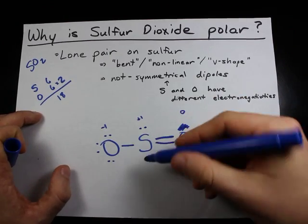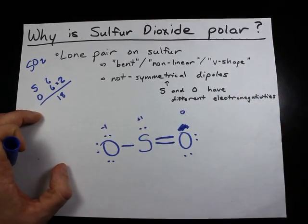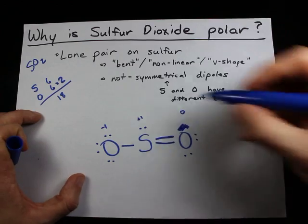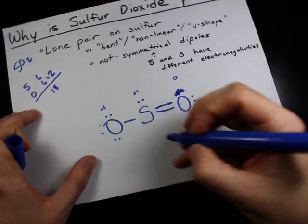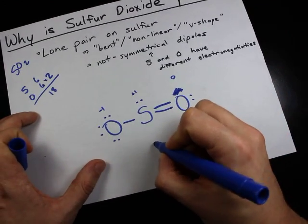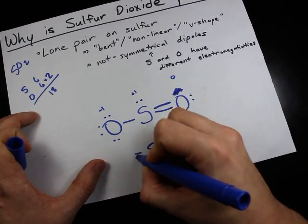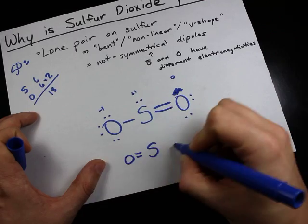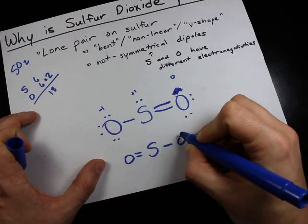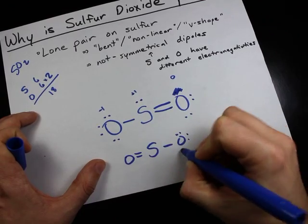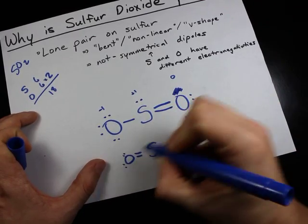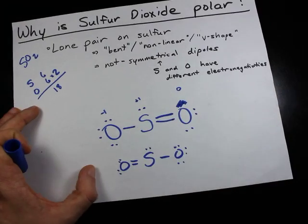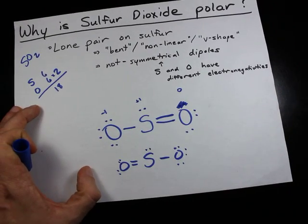Now, this is just one resonance structure that exists for SO₂. Another resonance structure has the other oxygen double bonded, still with a lone pair on the sulfur.